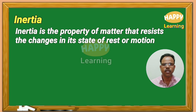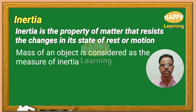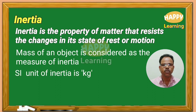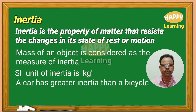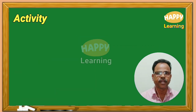Inertia. Inertia is the property of matter that resists the changes in its state of rest or motion. Mass of an object is considered as the measure of inertia. The SI unit of inertia is kg, that is kilogram. A car has greater inertia than a bicycle. A 25 kg block has greater inertia than a 5 kg block.